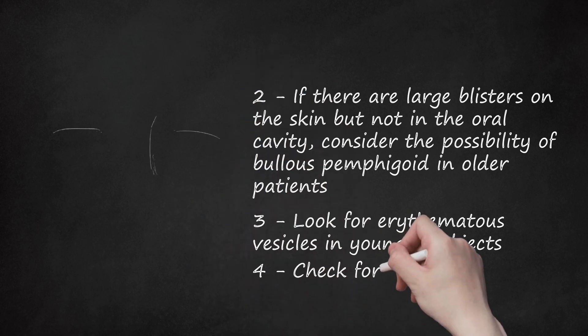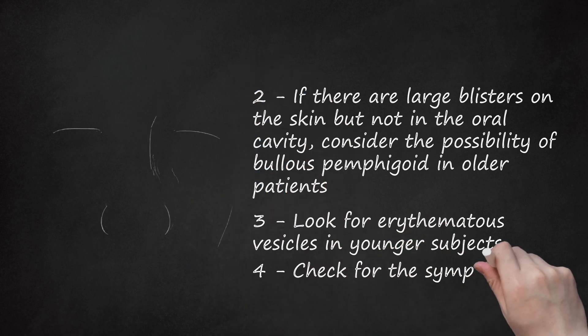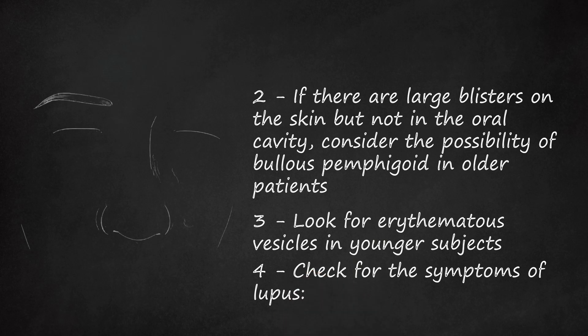Step 4: Check for the symptoms of lupus. Look for a butterfly-shaped rash, or malar rash, on the face that covers the cheeks and bridge of the nose, skin lesions that appear or worsen with sun exposure, mouth sores, and hair loss, or alopecia. This disorder can affect many organs in the body, including the skin.